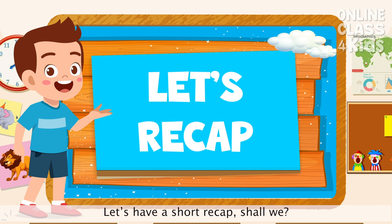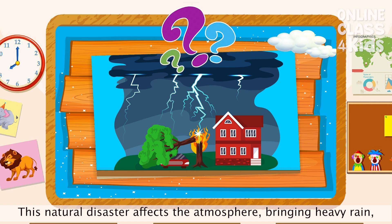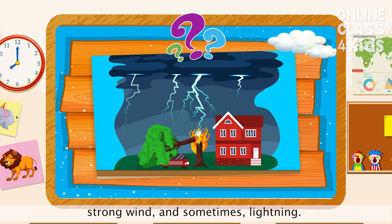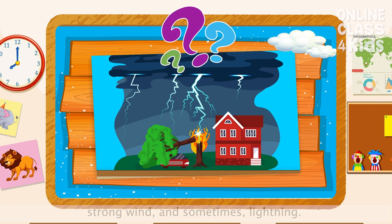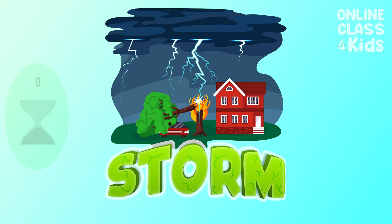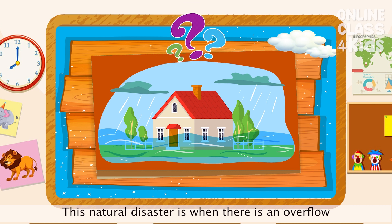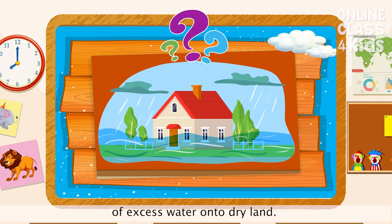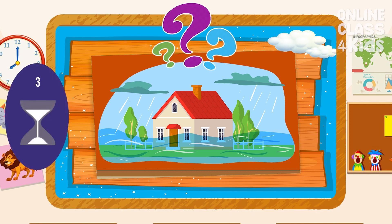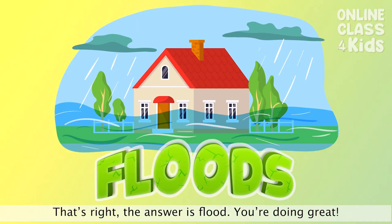Let's have a short recap, shall we? This natural disaster affects the atmosphere, bringing heavy rain, strong wind, and sometimes lightning. That's right! The answer is a storm. Good job! This natural disaster is when there is an overflow of excess water onto dry land. That's right! The answer is floods. You're doing great!